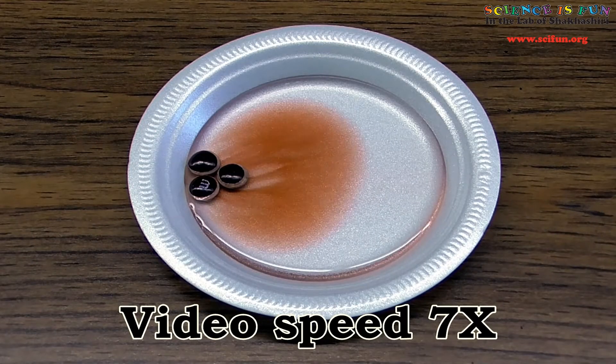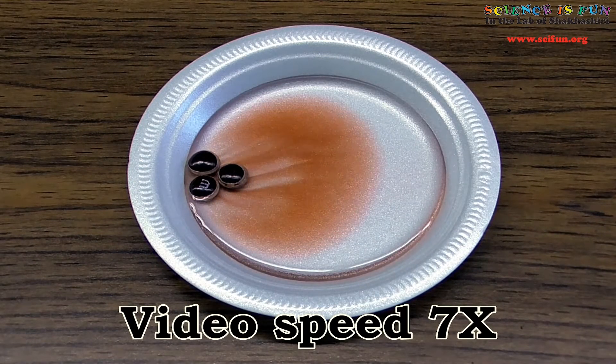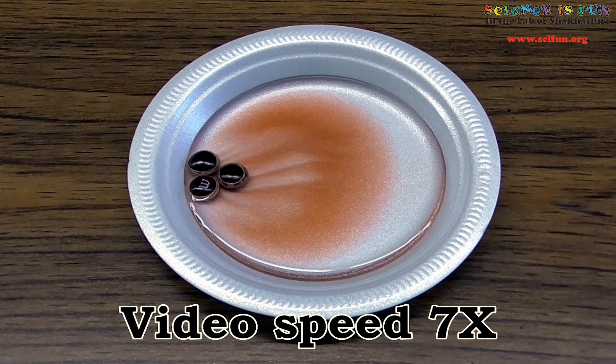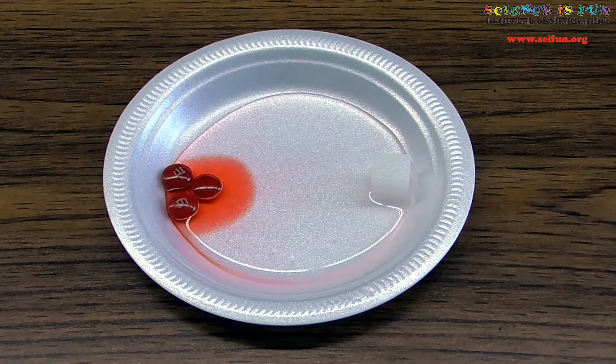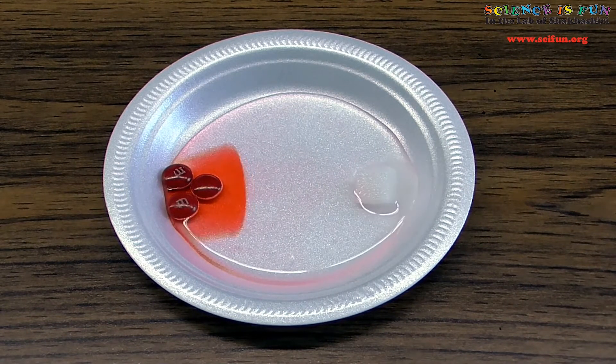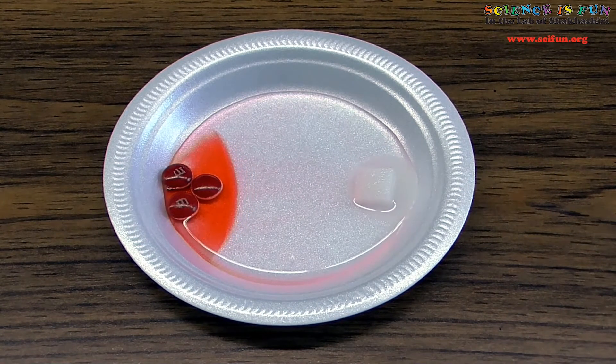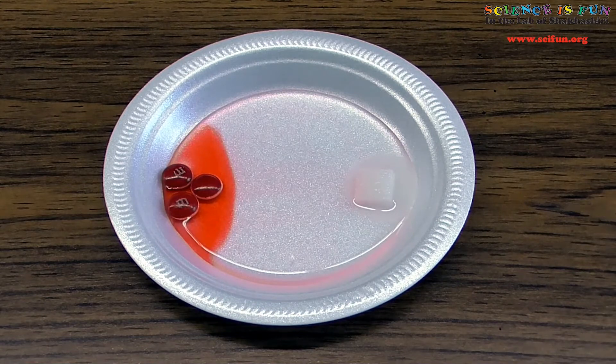Remember when we used candies on one side of the plate, but no sugar on the other? The material dispersed all throughout the water. But with sugar on the other side of the plate, the sugar appears to be blocking the material from spreading throughout the water. And you know what? I even see that sharp dividing line.